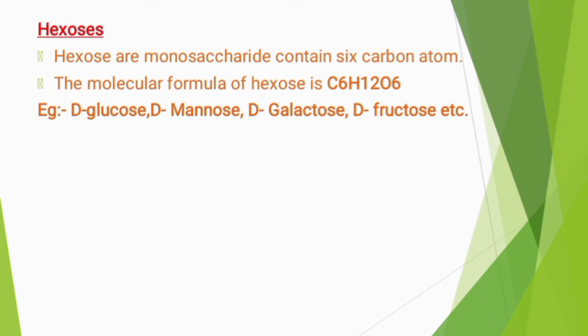The molecular formula of hexoses is C₆H₁₂O₆. Examples are D-glucose, D-mannose, D-galactose, D-fructose, and others.